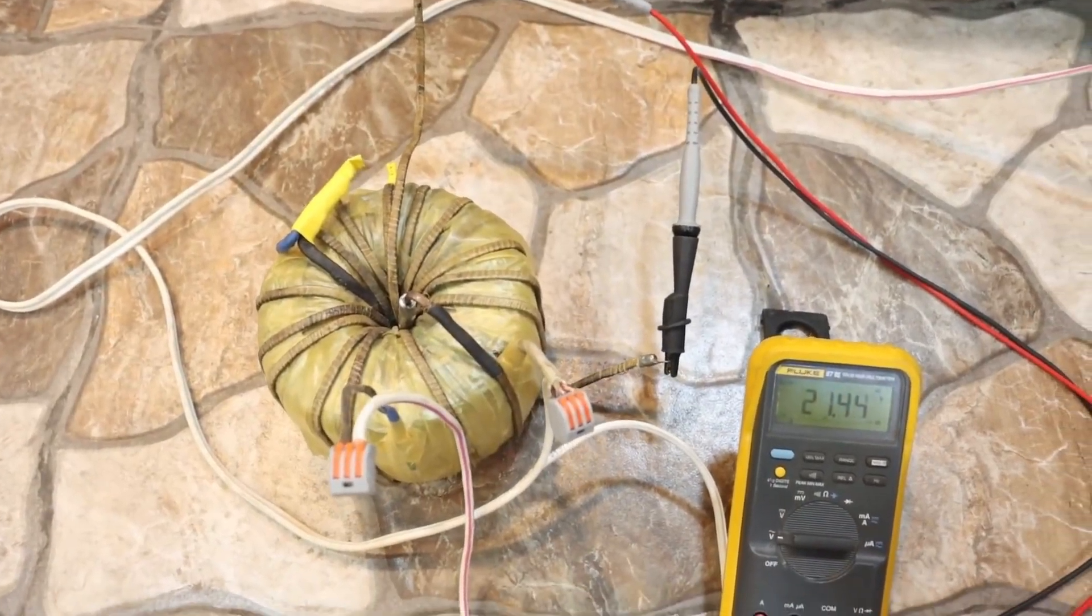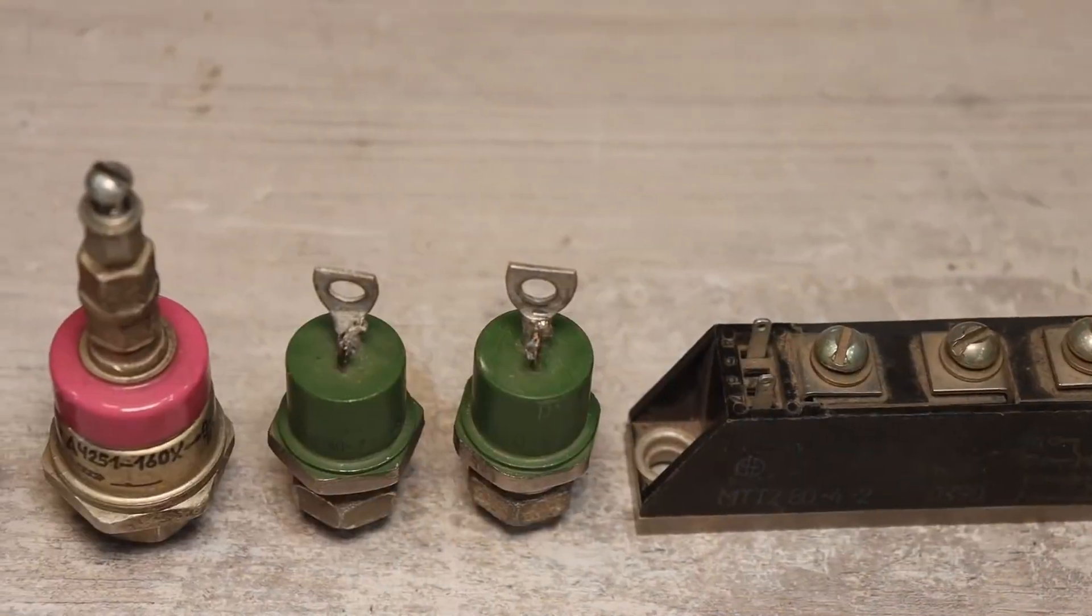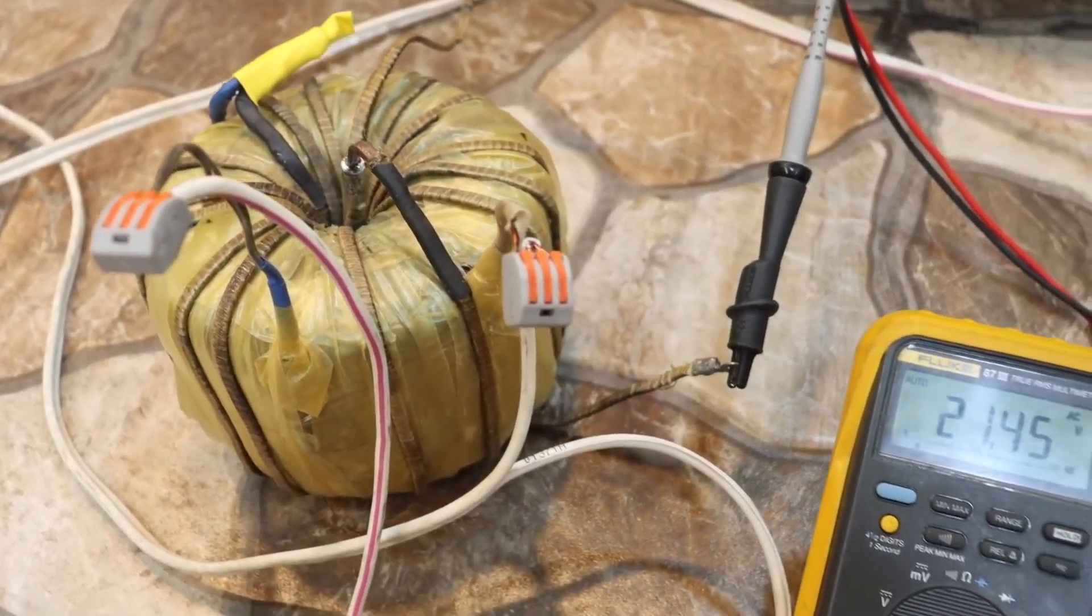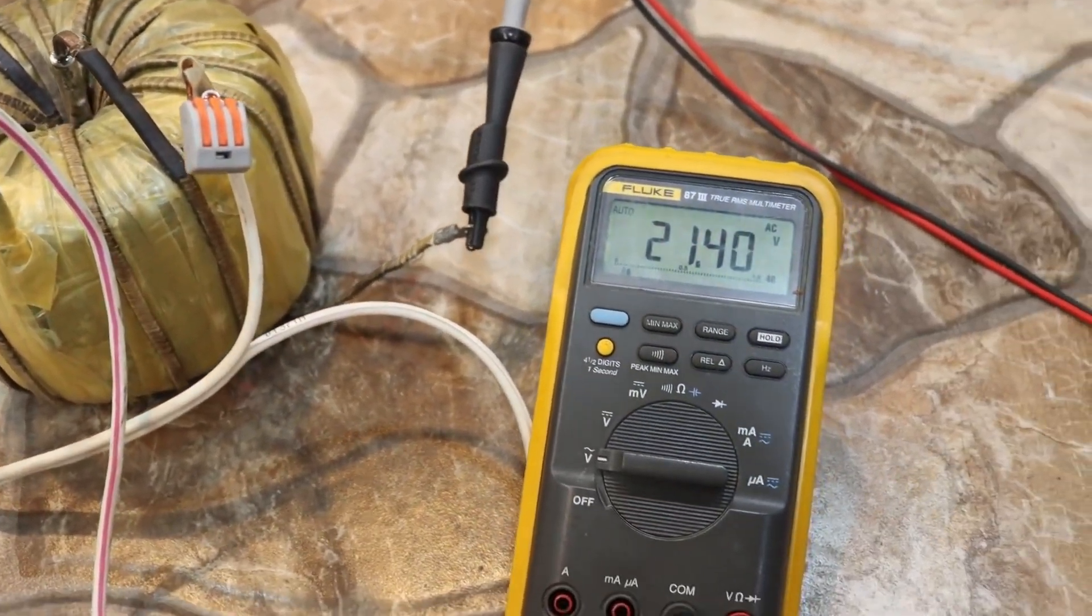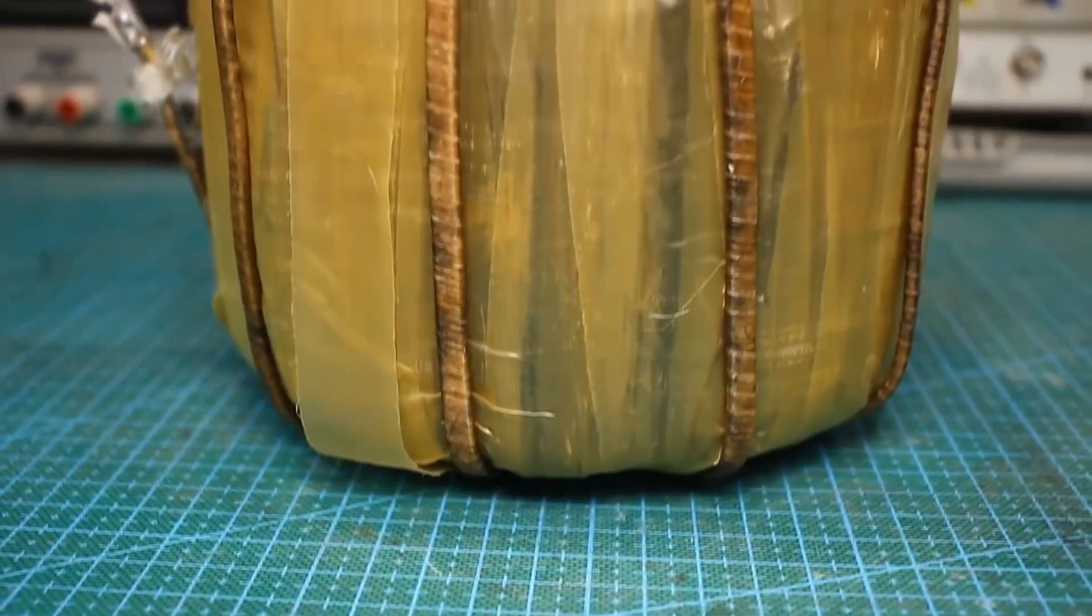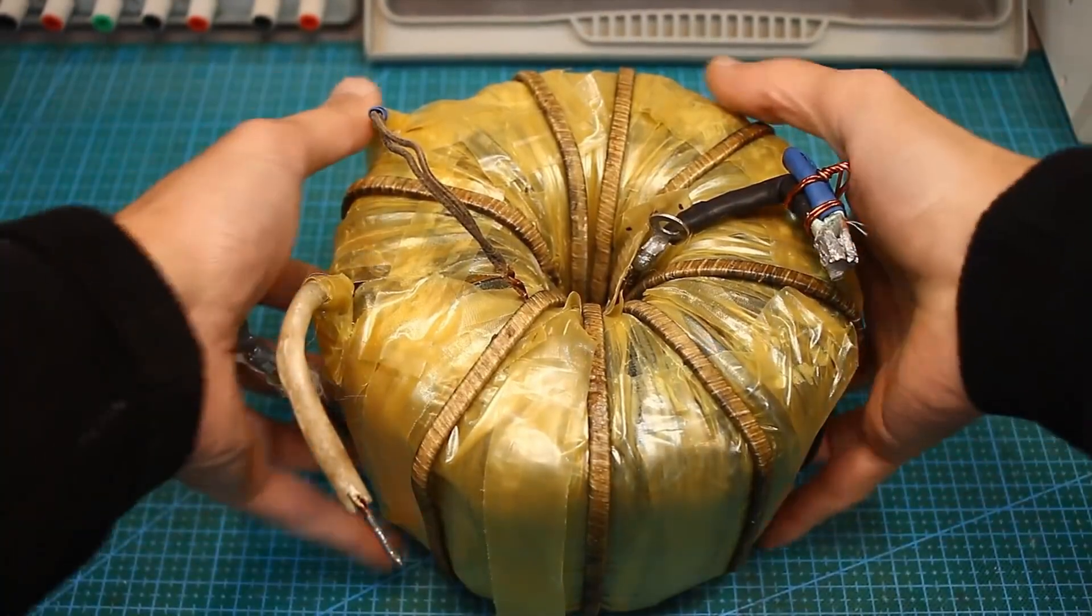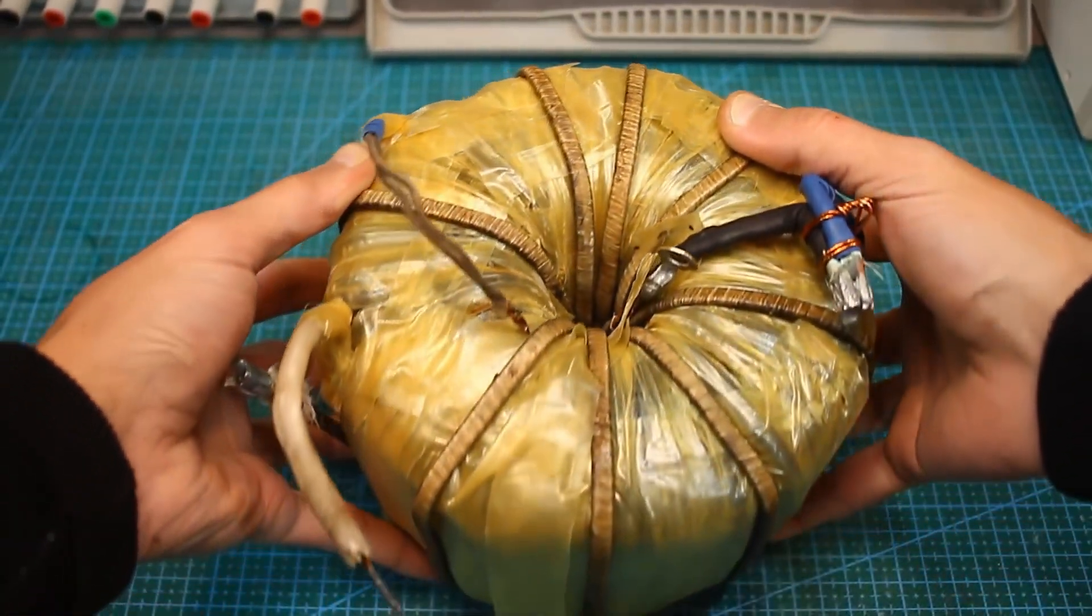You should always consider that there will be losses in the rectifier, and as a result, the secondary voltage might not be sufficient. Therefore, it's better to have a reserve of a couple or 3 volts, at the very least. In addition to its rigid characteristics, the toroidal transformer has another huge advantage. It is more compact than others with the same power.